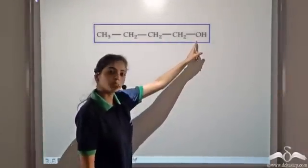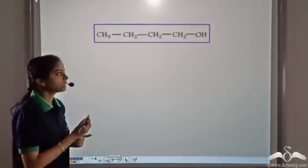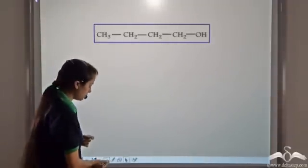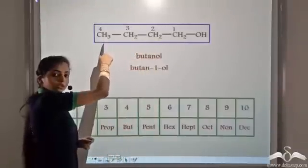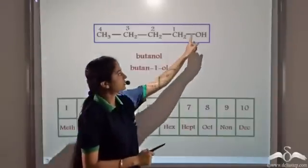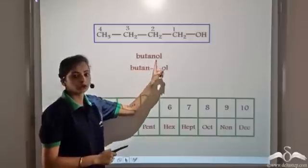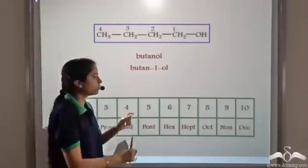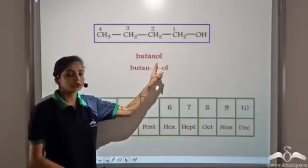The functional group should be included in the longest carbon chain. Now we have to number it. We start the numbering such that the functional group gets the lowest number, so we start the numbering from the right-hand side: one, two, three, four. The presence of four carbon atoms means we have 'but'. Since there is an OH group, that means it is an alcohol, so we give the suffix -ol. So we get butanol. Since the OH group is present at position one, we can also write it as butan-1-ol. This is the name given to this organic compound.